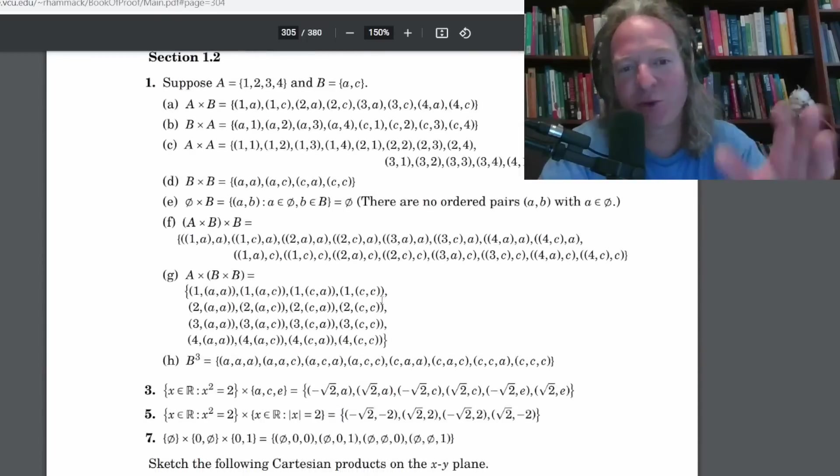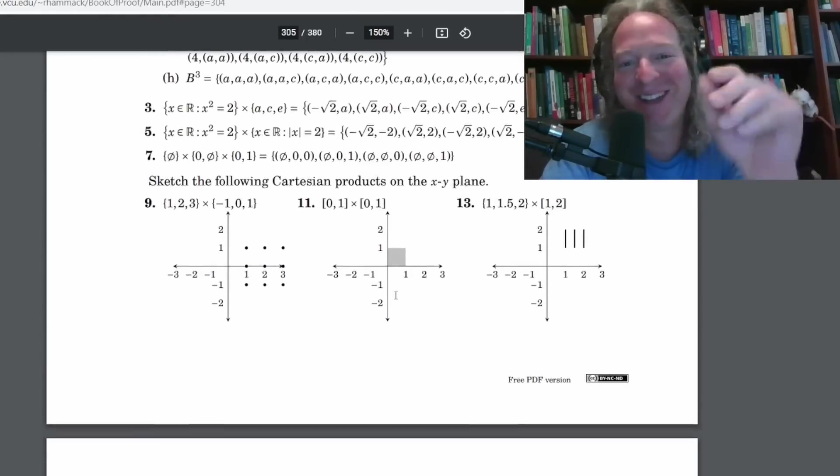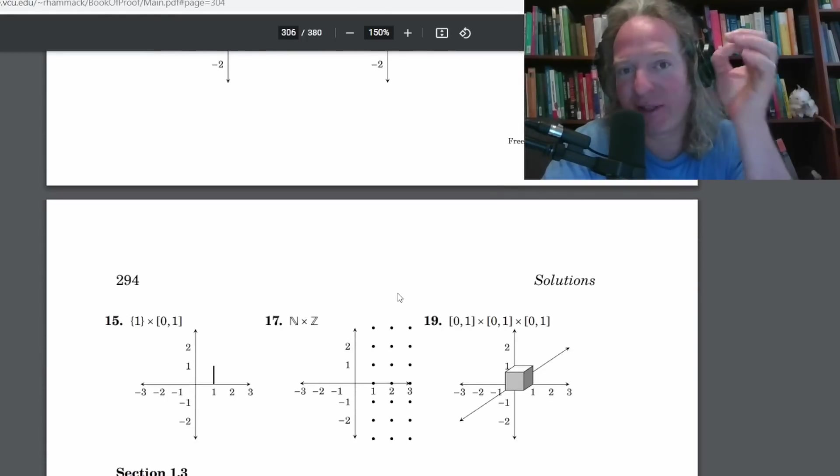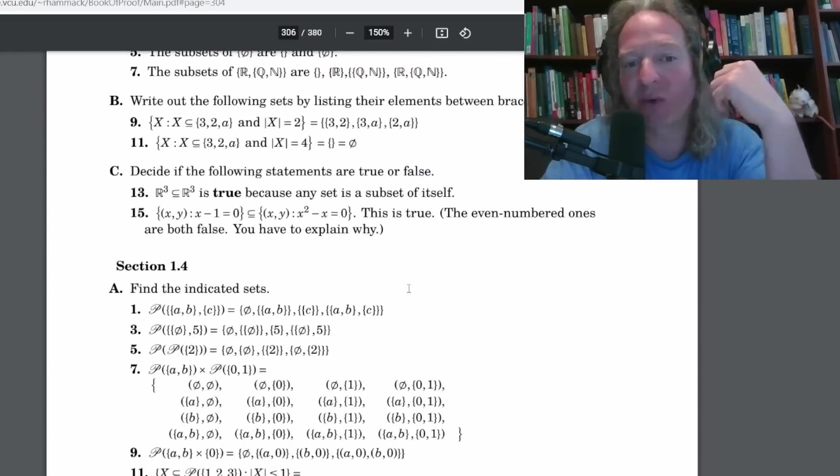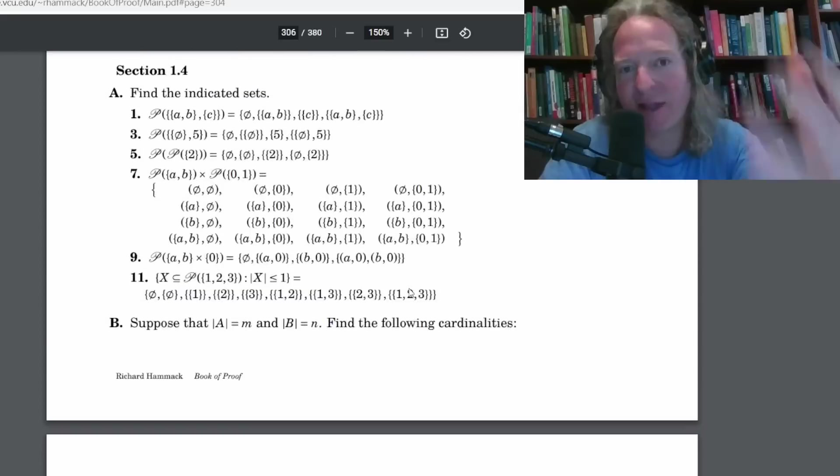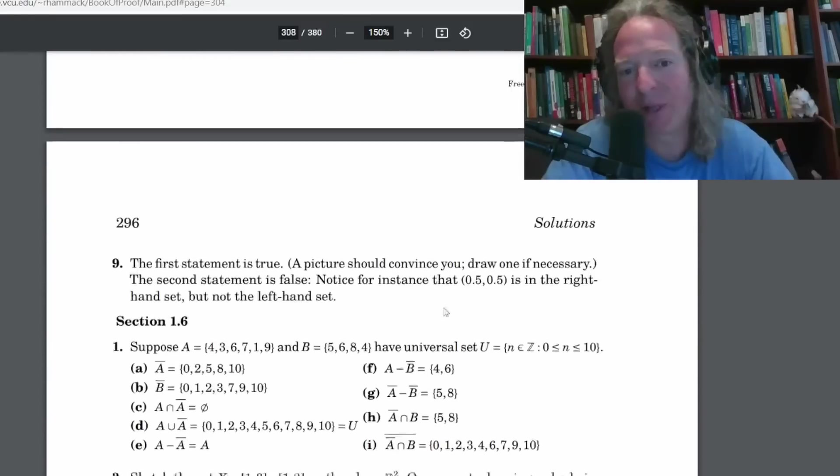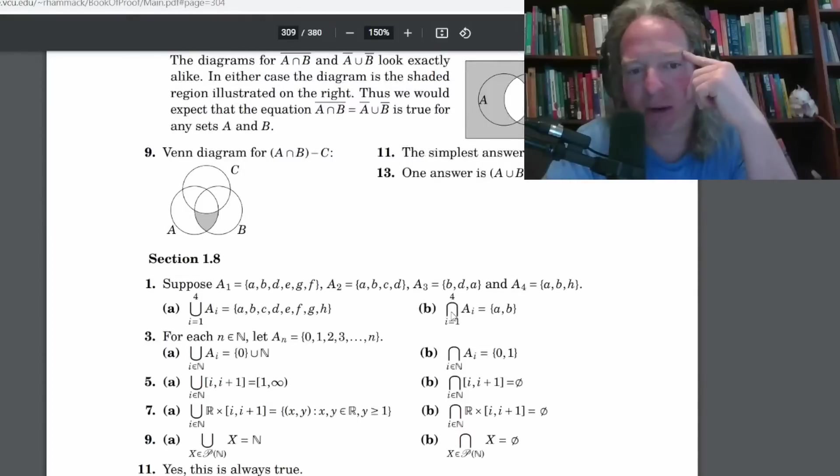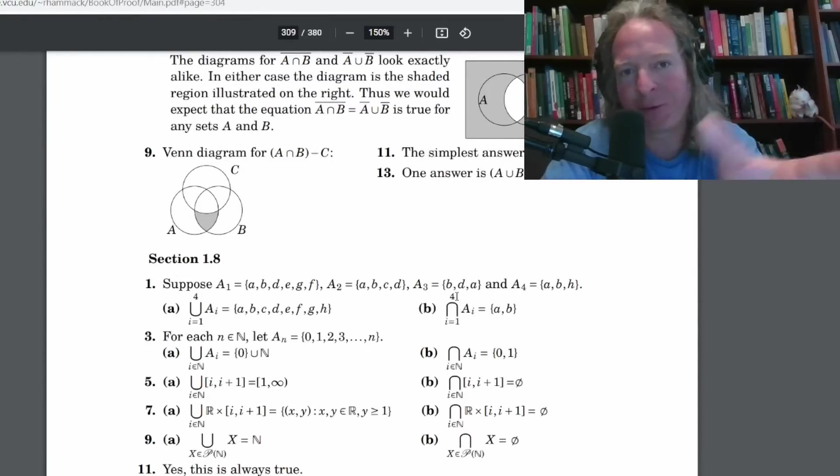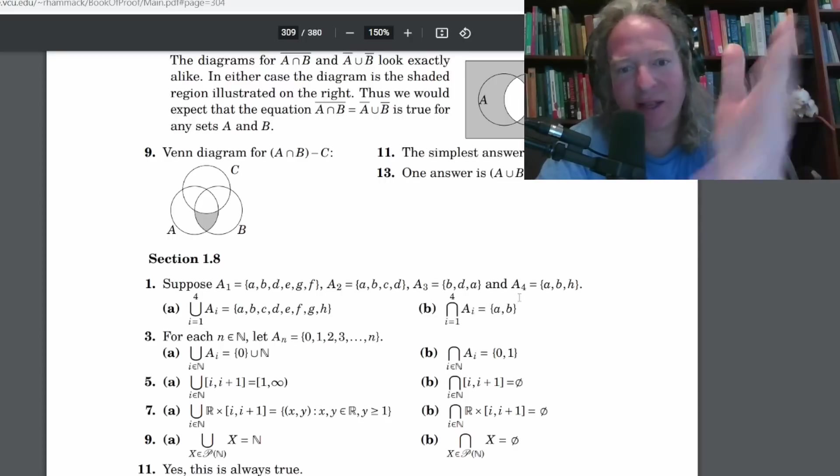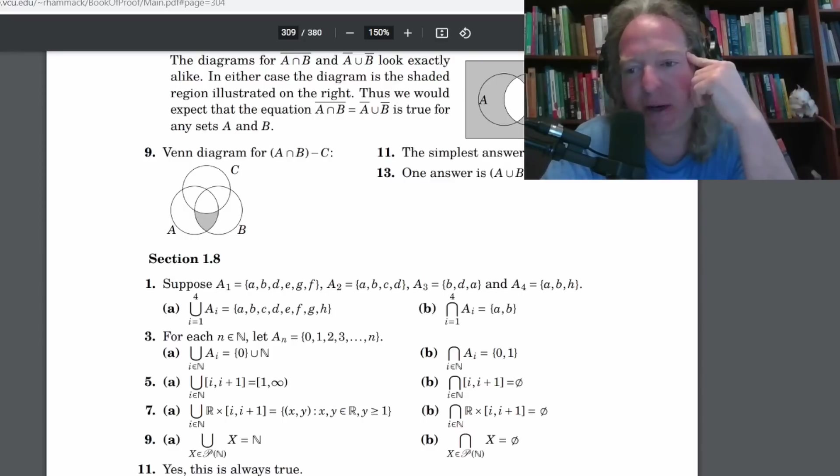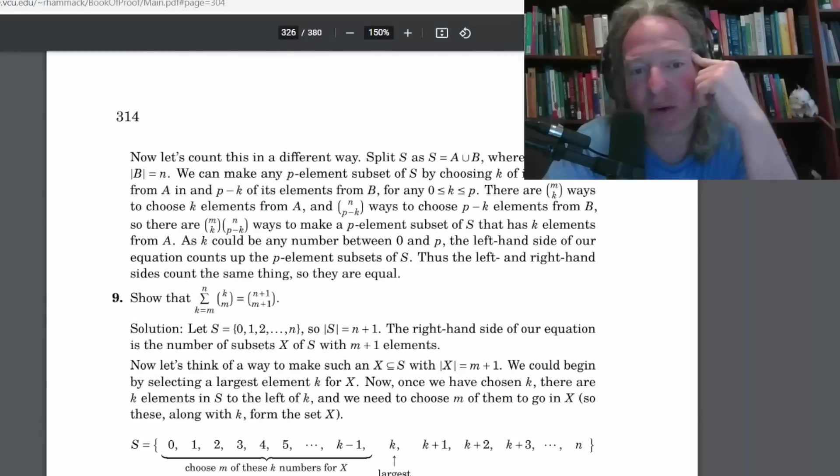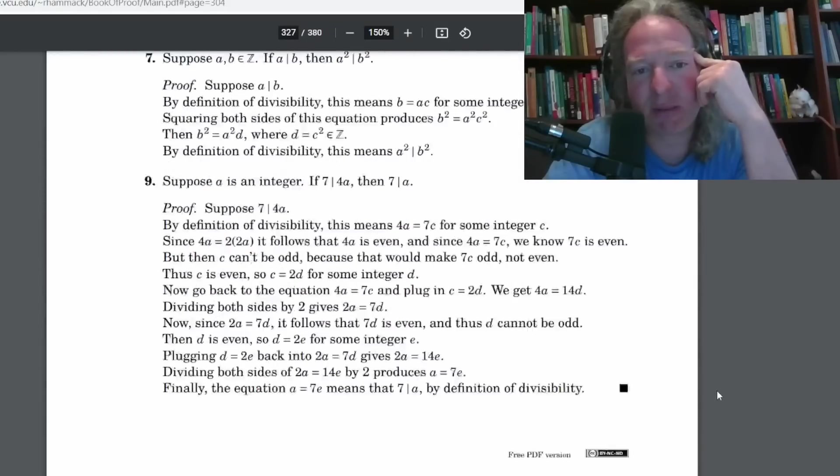Richard provides solutions to all of the odd numbered problems including the proofs and his proofs are very well written. But when it comes to proof writing, the best proofs are the ones you write. So I always think it's better to try to write your own proof first and then check the solutions.